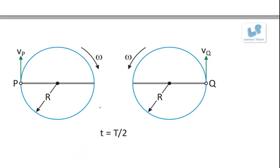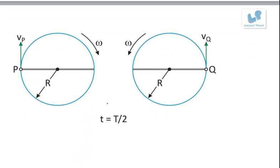Now let us take the case where time is half of the time period. They would have reached the diagonally opposite points here and here. Again the speed vp is equal to omega R and vq is again omega R. Both these speeds are in the same direction having same velocity, so the relative speed will be again 0.